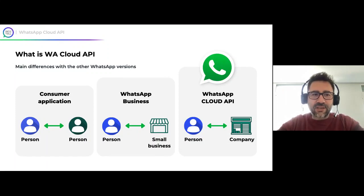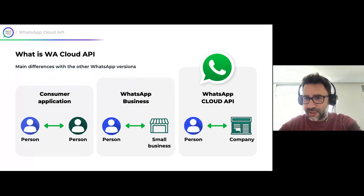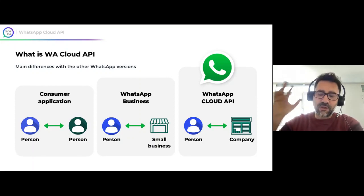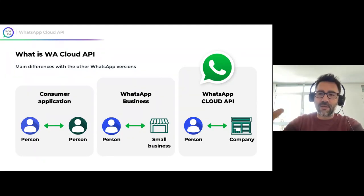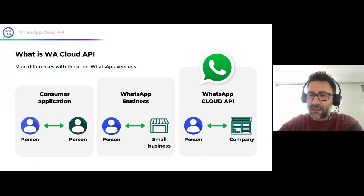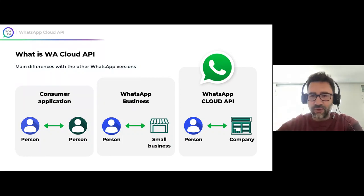Talking about WhatsApp Cloud API for those who are new here: WhatsApp Cloud API is not like the consumer application of WhatsApp Business — it's not an app you can download from the App Store. It's an API in the cloud. You need to work with a business solution provider like Wattel to have an interface to start using WhatsApp Cloud API. You can check our past webinars or talk with our team to learn about WhatsApp Cloud API and how you can use it in your company.